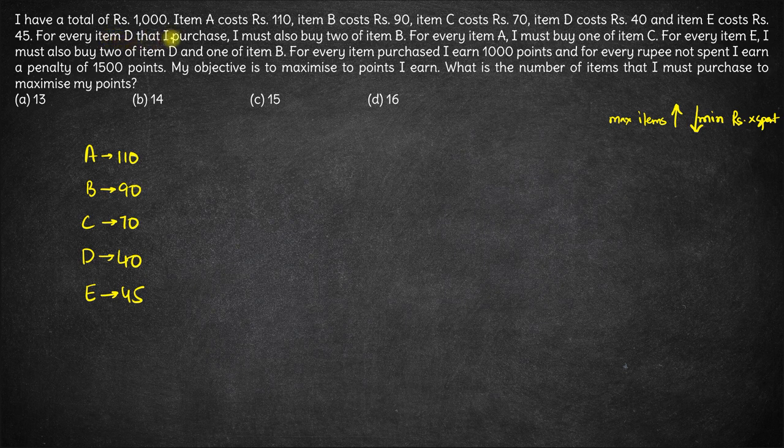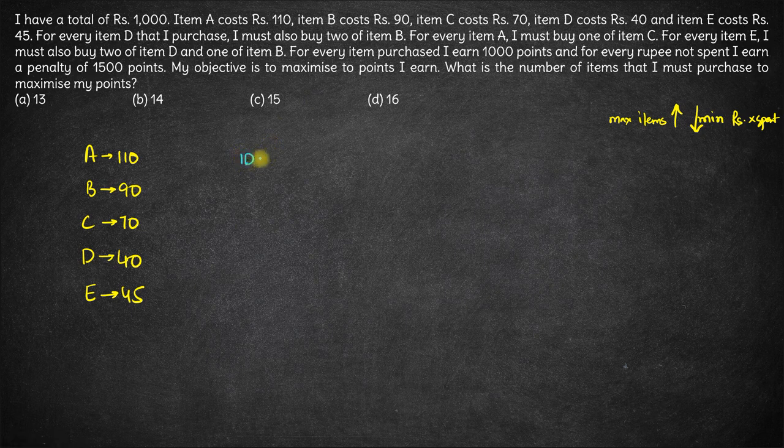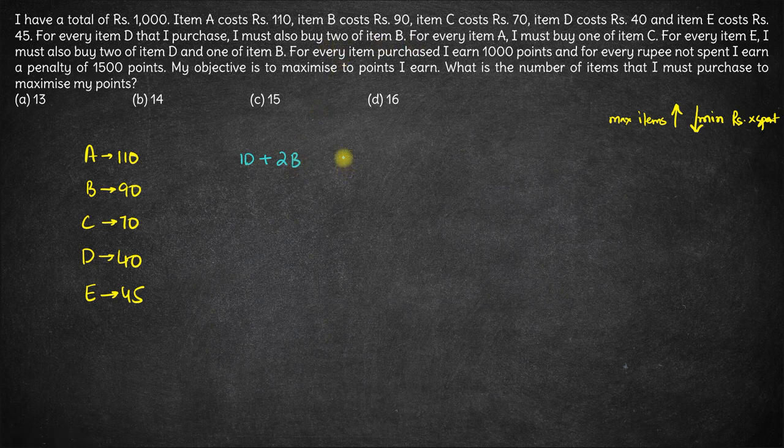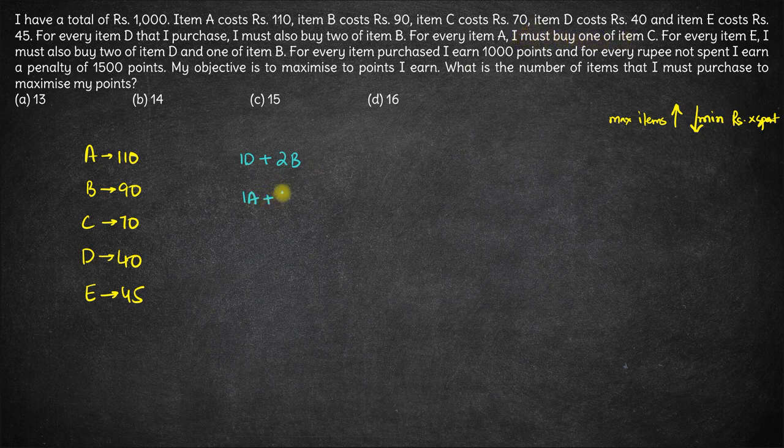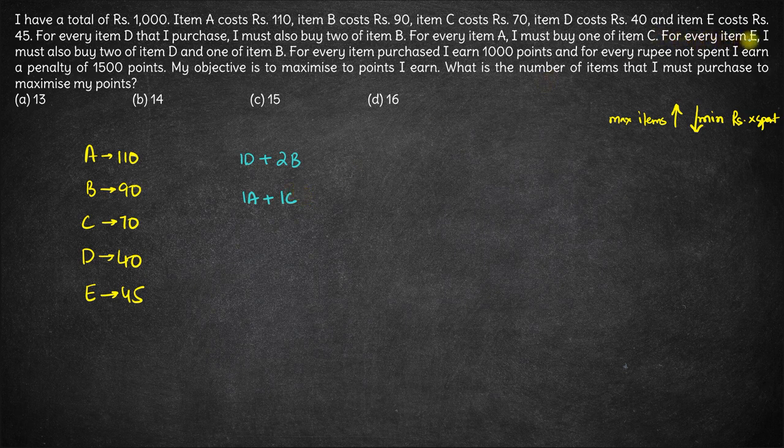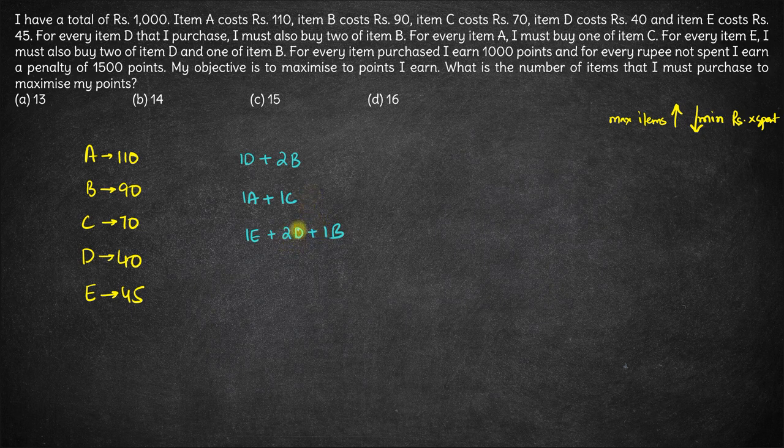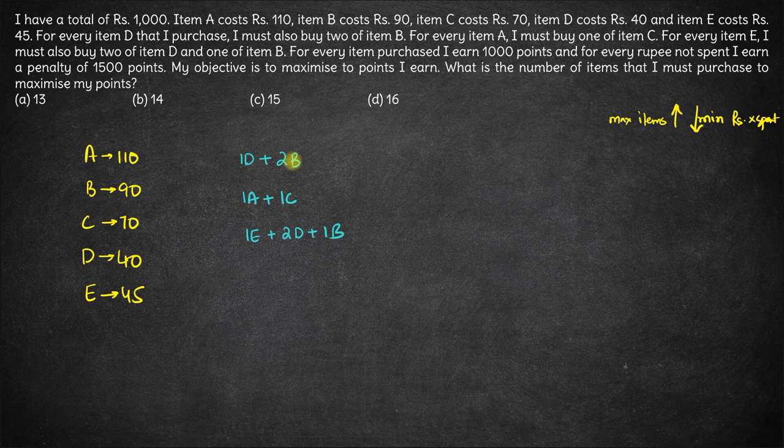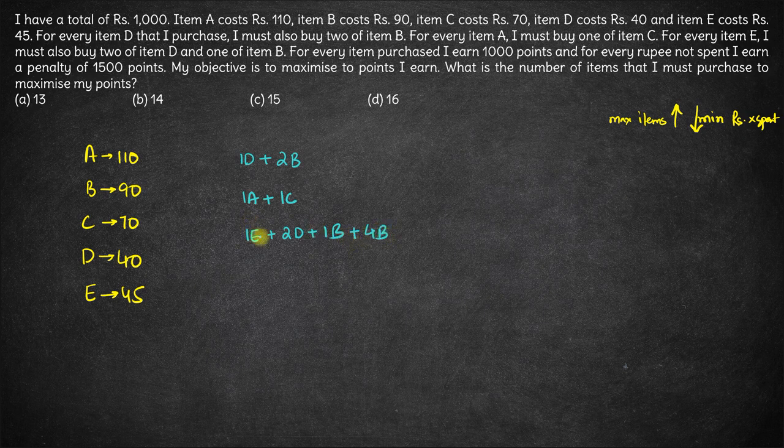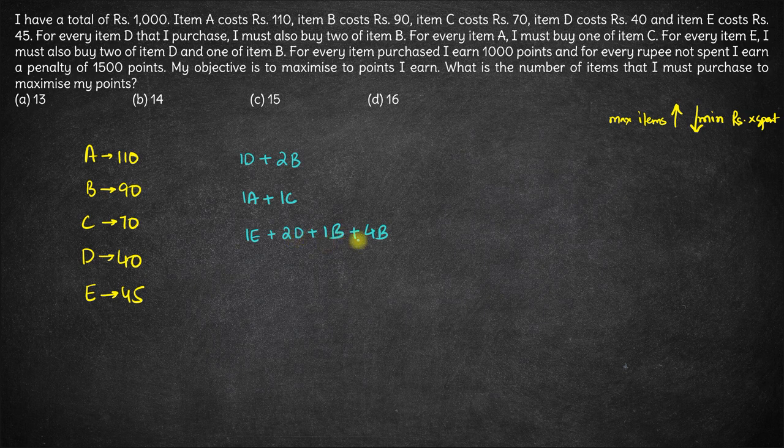It's given that for every item D that I purchase I must also buy two items of B. So if I purchase one D it means I must purchase two Bs as well. For every item A that I purchase I must buy one C as well. So one A implies one C. Now for every item E that I purchase I must buy two D and one B. For D, I must buy two Bs as well. So if I am purchasing two Ds I must buy four Bs. So if I buy one E effectively I will be buying one E plus two D plus five B.